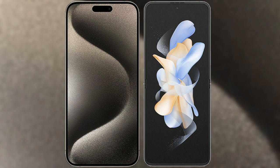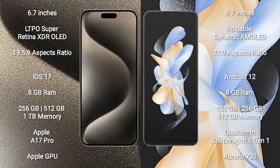I will compare the new iPhone 15 Pro Max with Samsung Galaxy Z Flip 4. iPhone 15 Pro Max comes with 6.7 inches, LTPO Super Retina XDR OLED display and aspect ratio 19.5:9. Samsung Galaxy Z Flip 4 comes with 6.7 inches, foldable dynamic AMOLED display and aspect ratio 21:9.